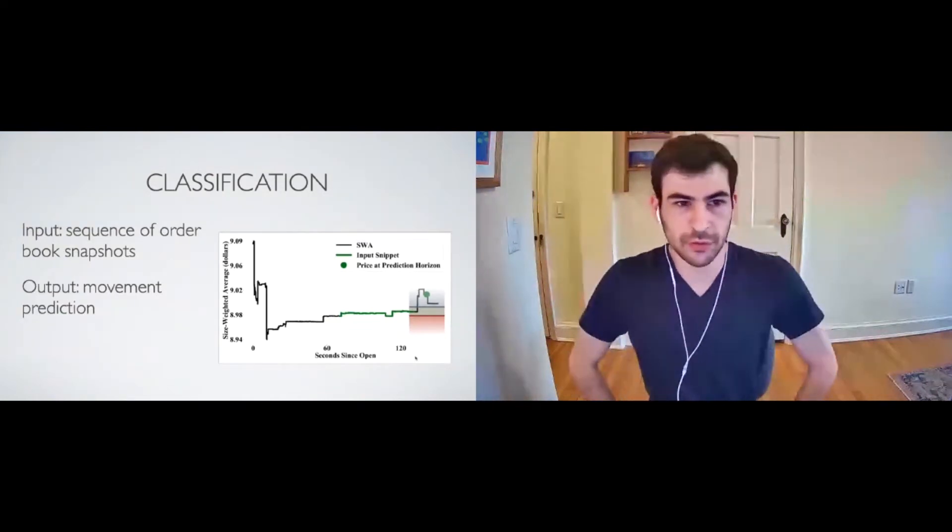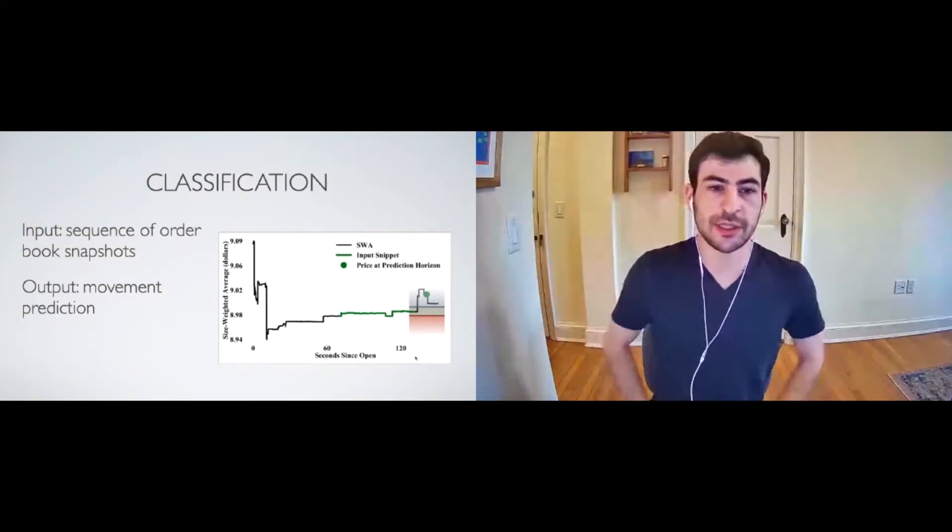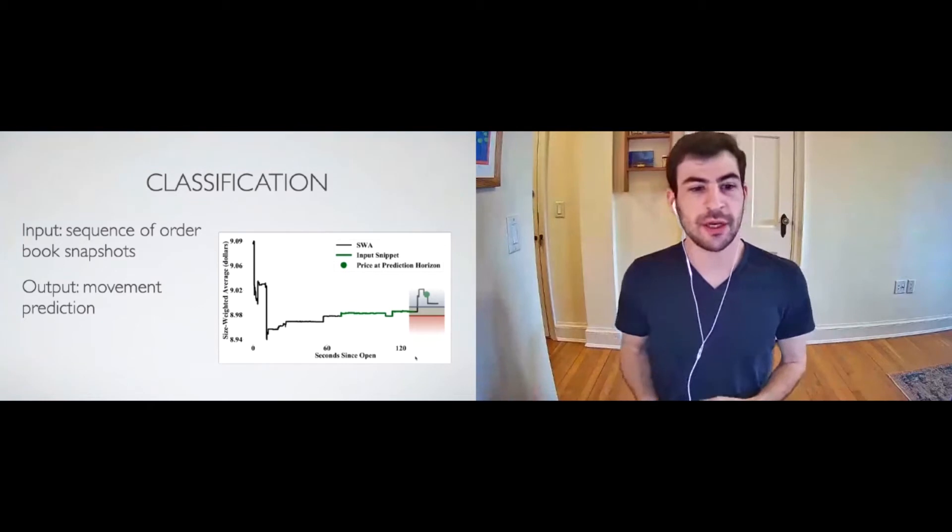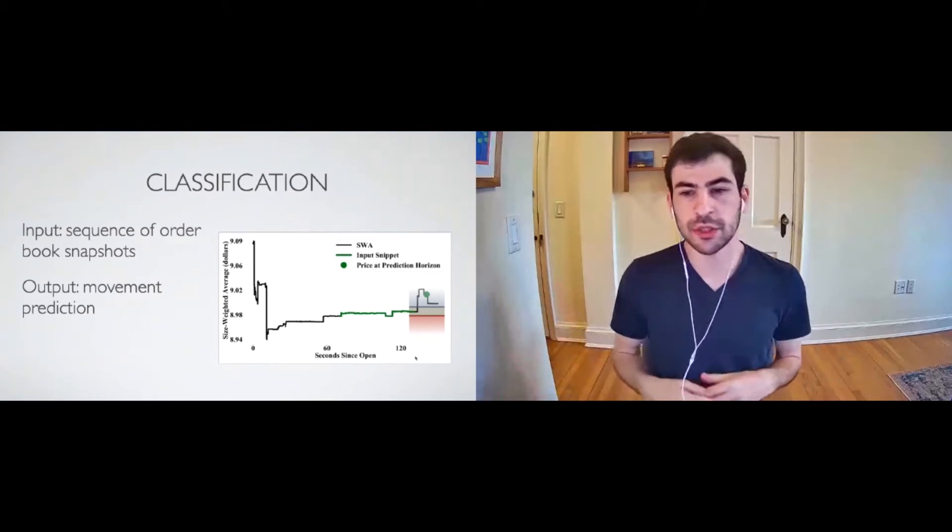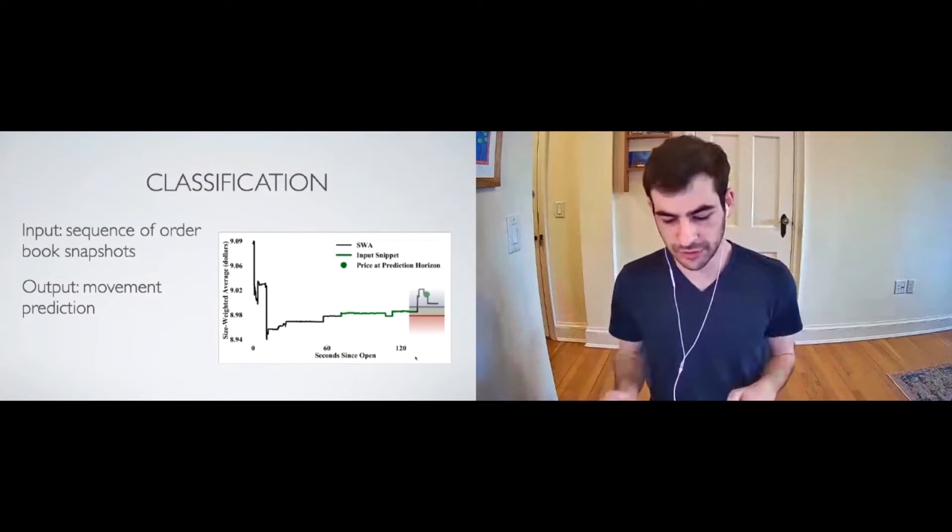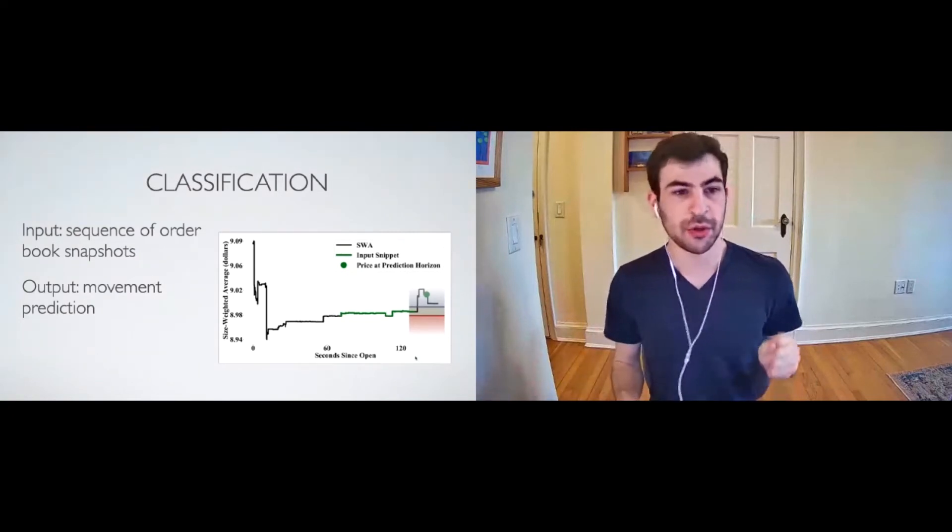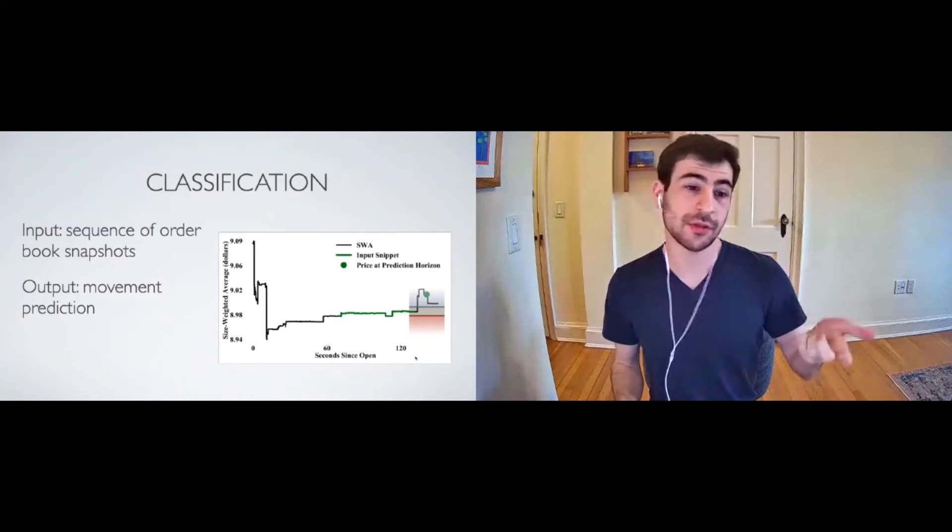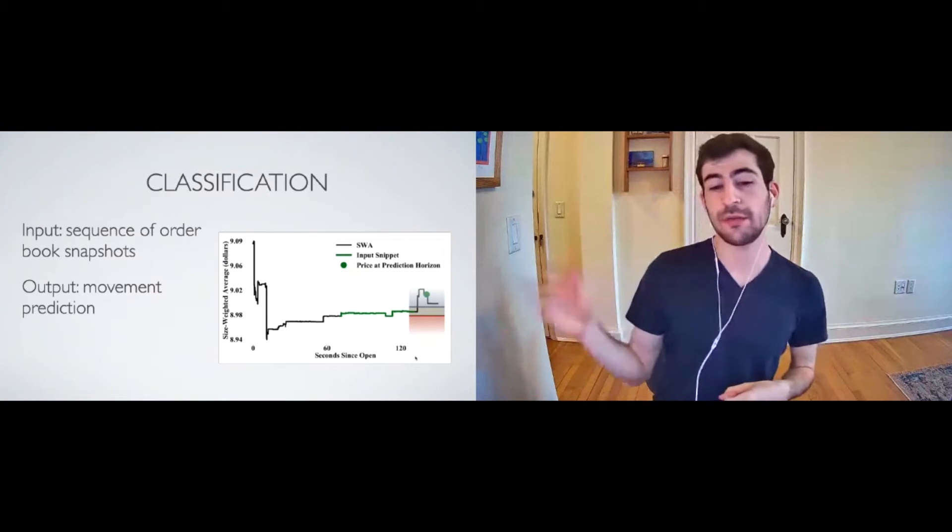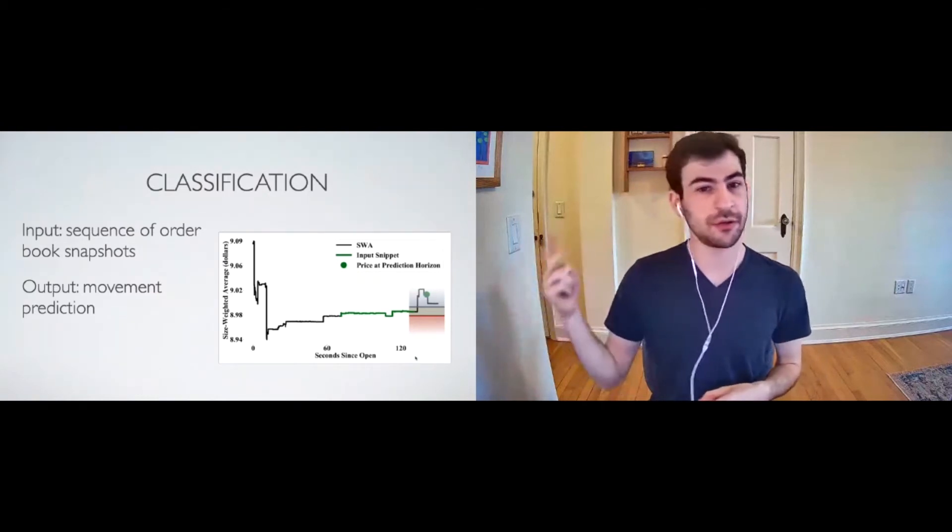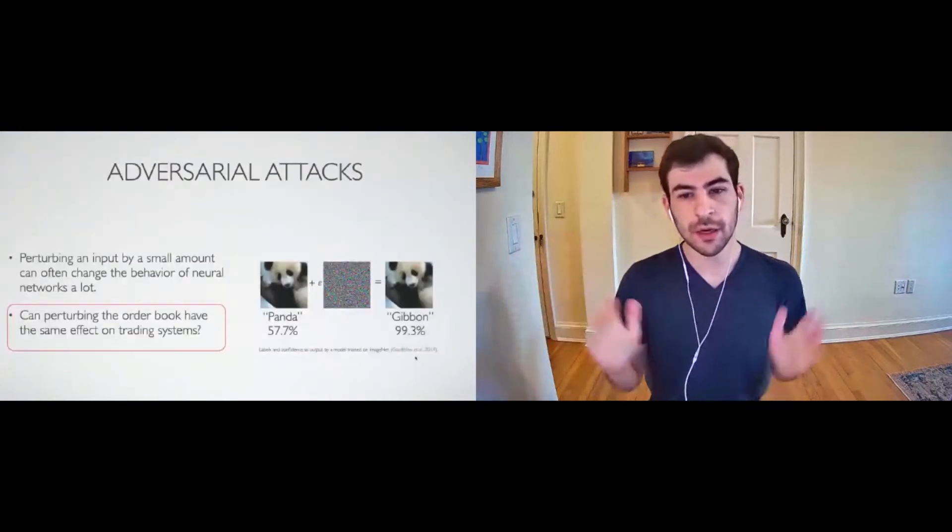So our models, just to review one more time, are going to take input that's a sequence of order book snapshots and the output is movement prediction up, down or stay the same. So when we talk about an adversarial attack, we're going to perturb inputs. That means a different sequence of order book snapshots. And we're going to hope that the output is perturbed also. So a different classification, this three class problem, move up, move down or stay the same.